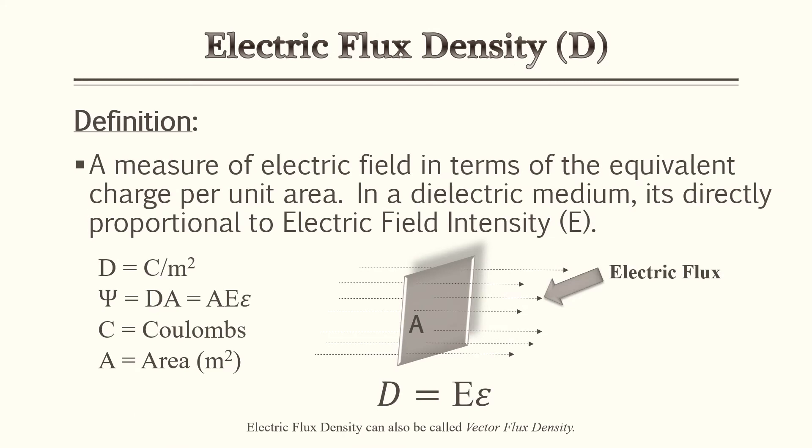Our next associated term is electric flux density, which is symbolized by a capital D. Electric flux density is a measure of electric field in terms of equivalent charge per unit area. Think of it like this: in a rainstorm, every raindrop is electric flux. If you have a high amount of raindrops in a smaller area, you have a very dense rainstorm — that's your electric flux density.